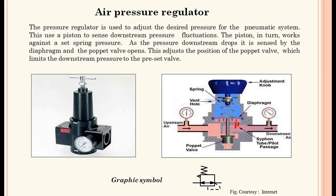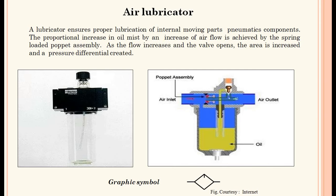Air pressure regulator — the pictorial view, photo, cut section, and symbol are shown. The pressure regulator is used to adjust the desired pressure for the pneumatic system. It uses a piston to sense downstream pressure fluctuations, which works against a set spring pressure. As the pressure downstream drops, it is sensed by the diaphragm and the poppet valve opens, adjusting its position to limit the downstream pressure to the preset value.